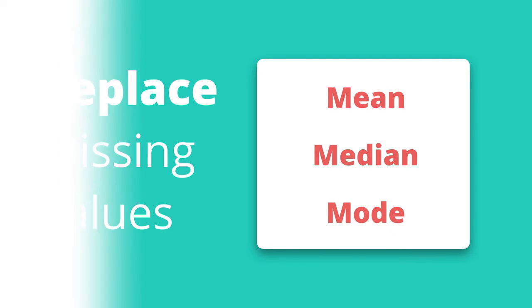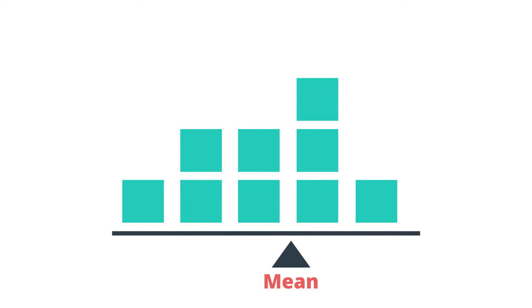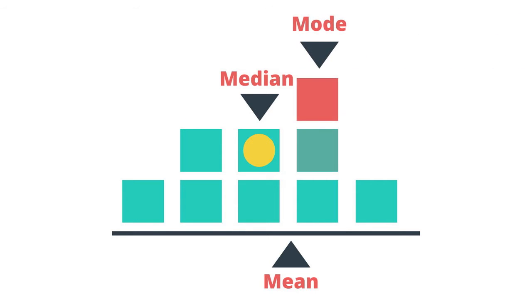As a reminder, the mean is the average of the values — technically, it's where we add up all the existing values and divide them by the number of values you have. The median is the midpoint of the data values; you basically put all the values in order and then select the value that's halfway between the first and the last values. The mode is the most common of the data values — in other words, it's the value that occurs most often in the data set.